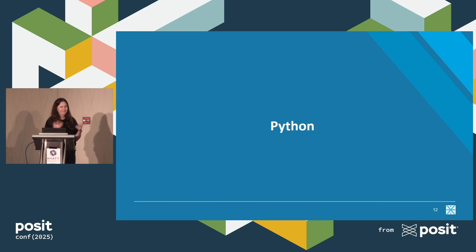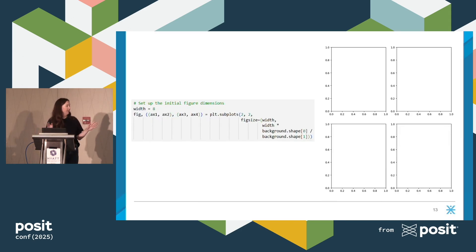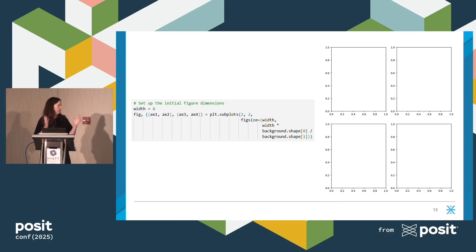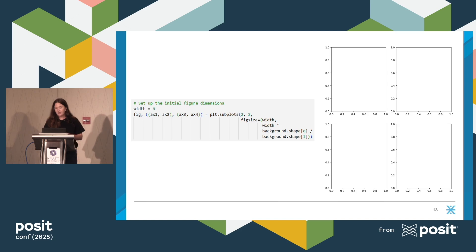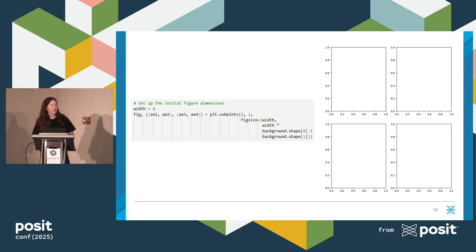Python — it's weird that it's first, but let's dive into it. For Python, we used pandas and numpy for data cleaning. For the visual, we used matplotlib and matplotlib's pyplot, lines, and font manager modules. All we're doing in the initial setup is creating a figure with four subplots: setting the figure width, creating a two-by-two grid of subplots where axes one through four are the subplot areas, and calculating the figure's overall size based on the dimensions of the background image — shape zero is the height, shape one is the width.